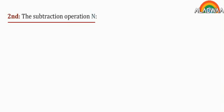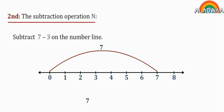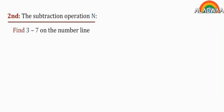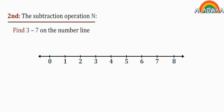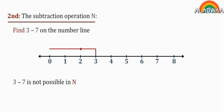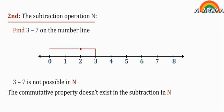Second: the subtraction operation. To subtract 3 from 7 on the number line, move from 0 to 7, then return back 3 steps to the left side. For 3 minus 7 on the number line, move from 0 to 3, then return back 7 steps to the left — you will find nothing. Therefore, 3 minus 7 is not possible in N. The commutative property does not exist for subtraction in N.